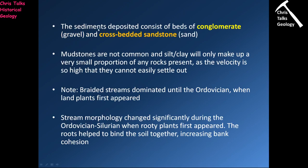The sediments deposited by braided river systems tend to be conglomerates — coarse sediments made up of gravels and cobbles — with rounded to sub-rounded clasts, because the energetic environment causes clasts to bang into each other and get rounded off quickly. We also get cross-bedded sandstones representing the river channels themselves. Mudstones are not common because clay and silt are transported out of the area.